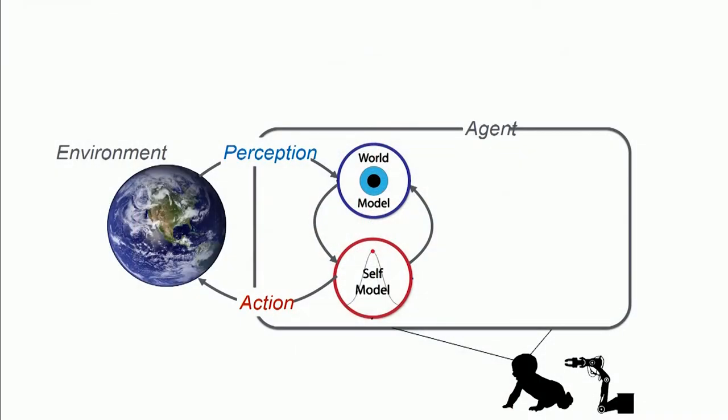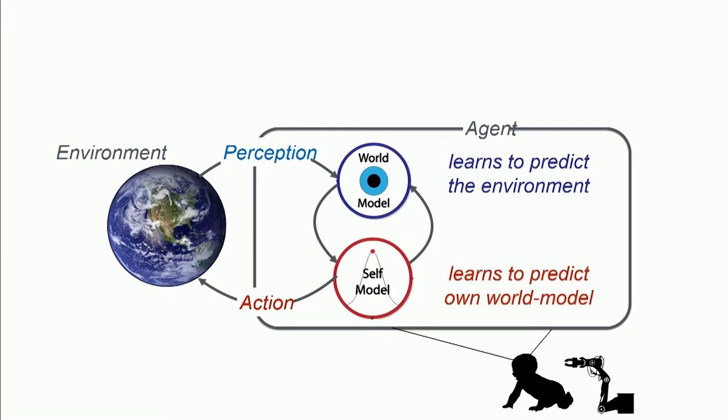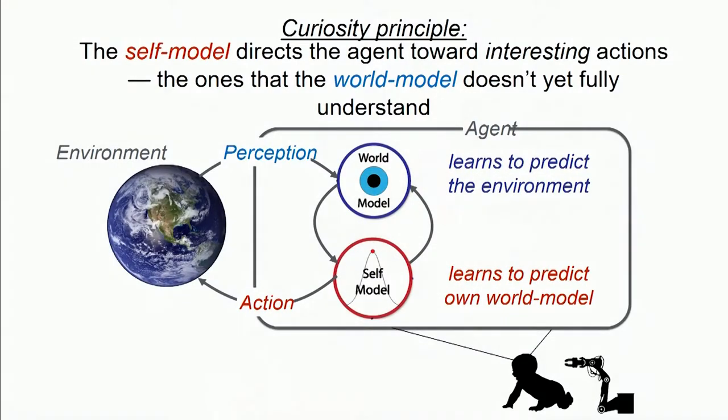The big challenge for both robots and humans is the uncertainty in the world. To address that, we equip our agent with two thinking structures: a world model and a self model. The goal of the world model is to learn to predict the environment and the physical consequences the agent has on it. The self model learns to predict the world model itself — it's our self-knowledge, our understanding of what our capabilities are, what we can and cannot do, what our limitations are. And it's changing all the time.